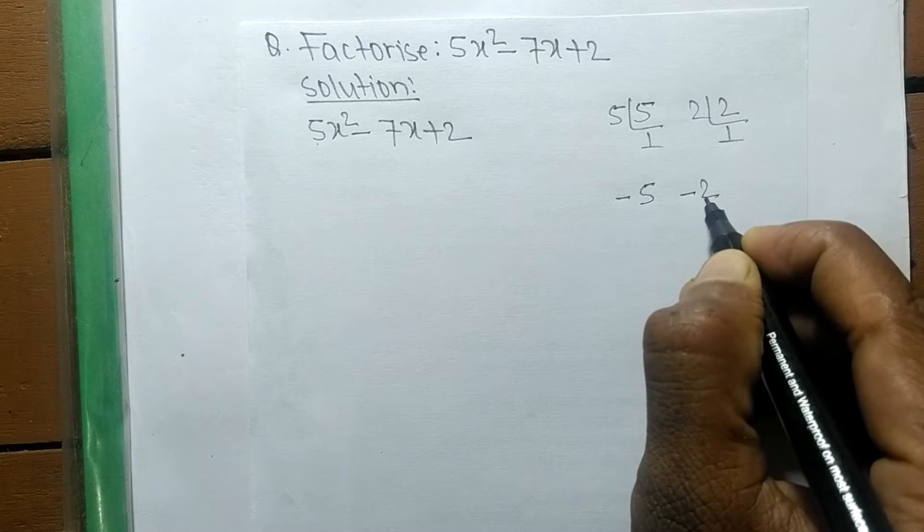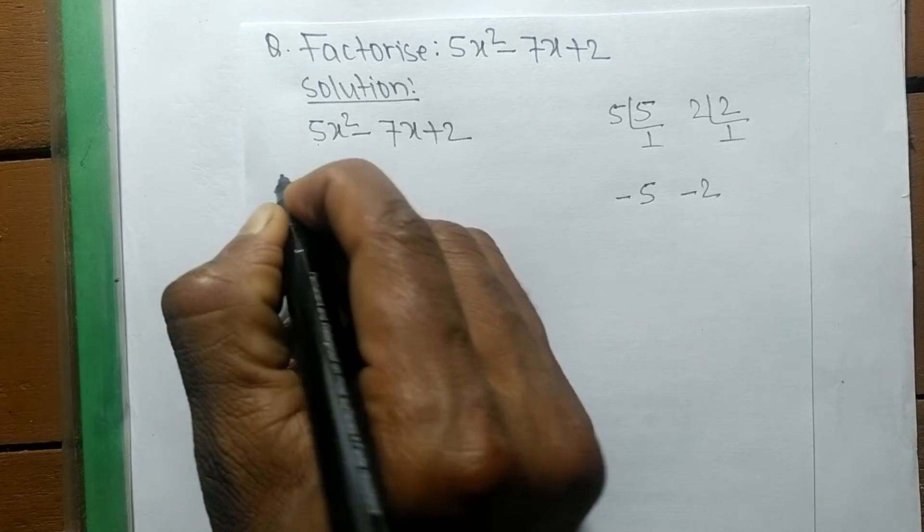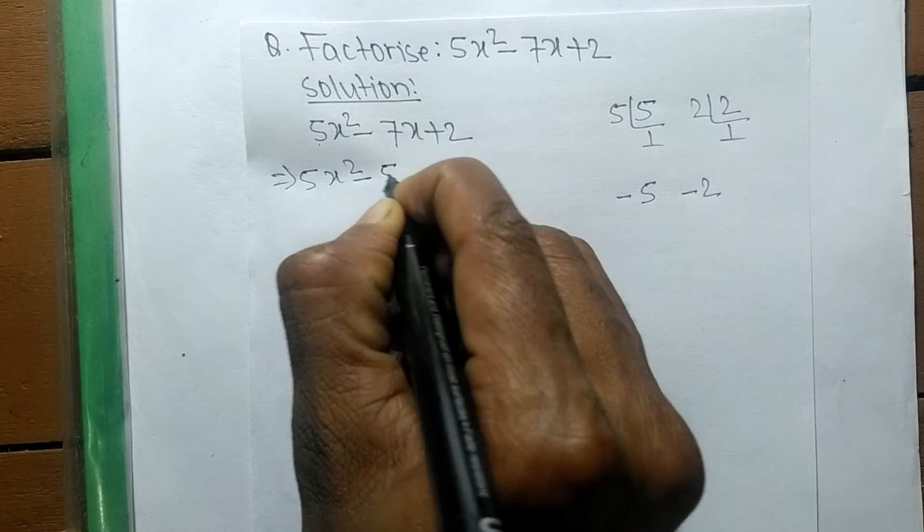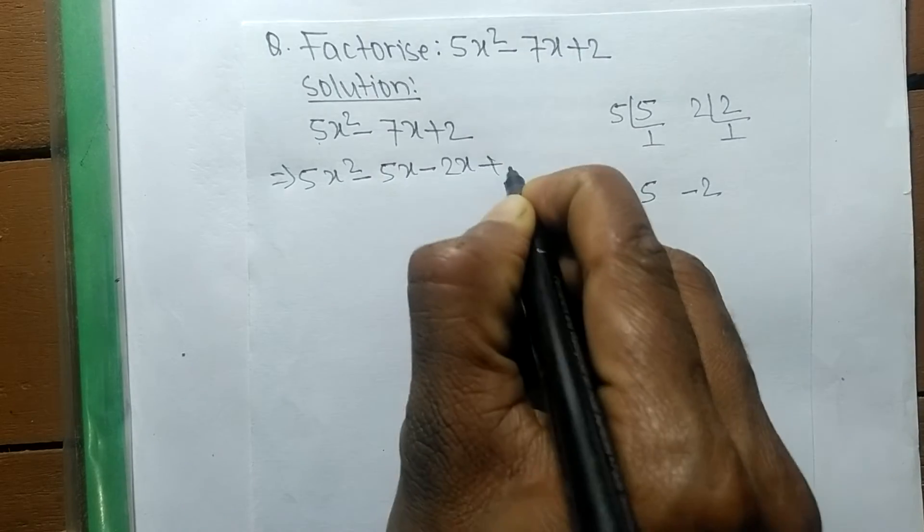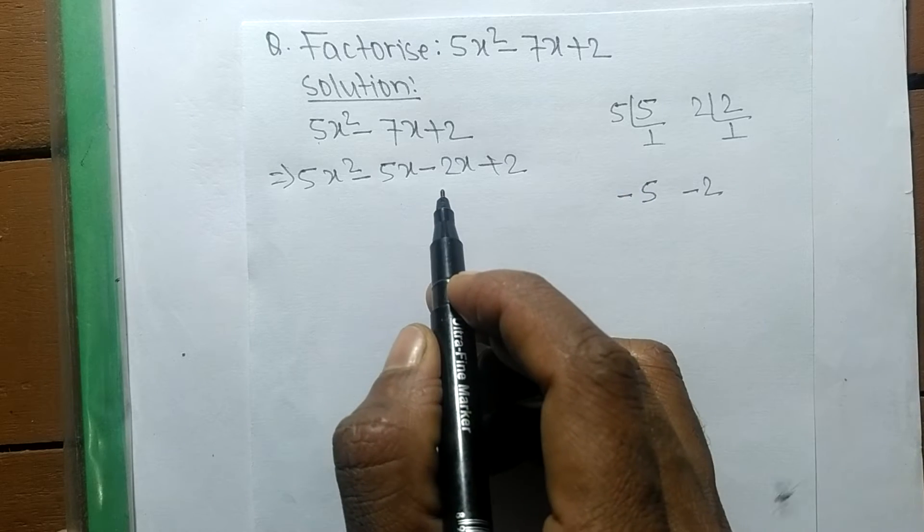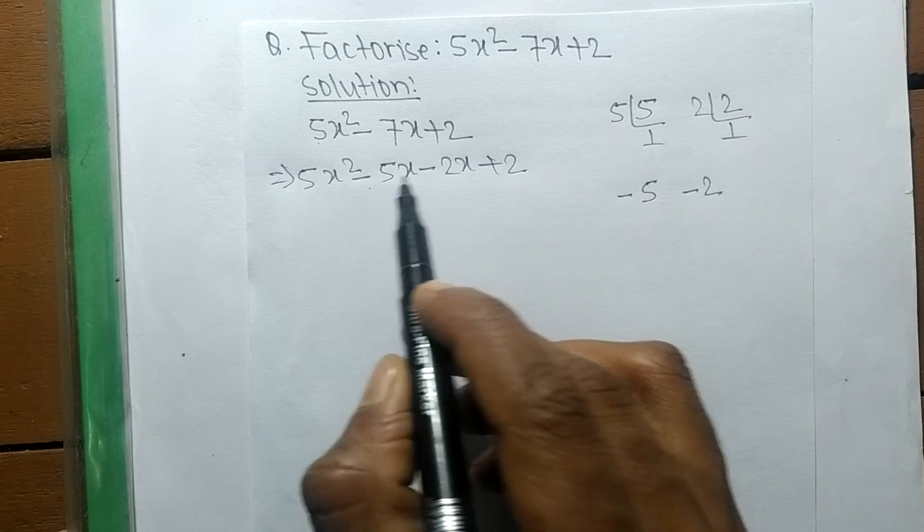So we have to take here minus 7, so minus 5 and minus 2 means it is minus 7. So now we can write it as 5x squared minus 5x minus 2x plus 2. So minus 5x minus 2x means minus 7x.